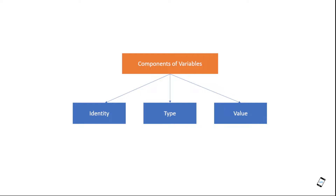What is the data type of the variable? It could be a string or integer, or a boolean — true or false. That is the data type. Next is the value — the actual data stored in the variable.